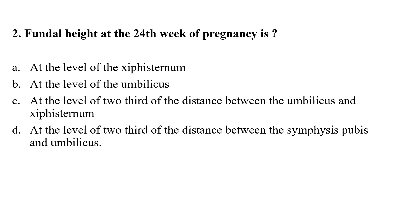Question number 2: Fundal height at 24 weeks of pregnancy is — option A: at the level of xiphisternum; option B: at the level of umbilicus; option C: at the level of two-thirds of the distance between the umbilicus and xiphisternum; option D: at the level of two-thirds of the distance between the symphysis pubis and umbilicus. Correct option is B — at 24 weeks of pregnancy the fundal height is at the level of umbilicus.